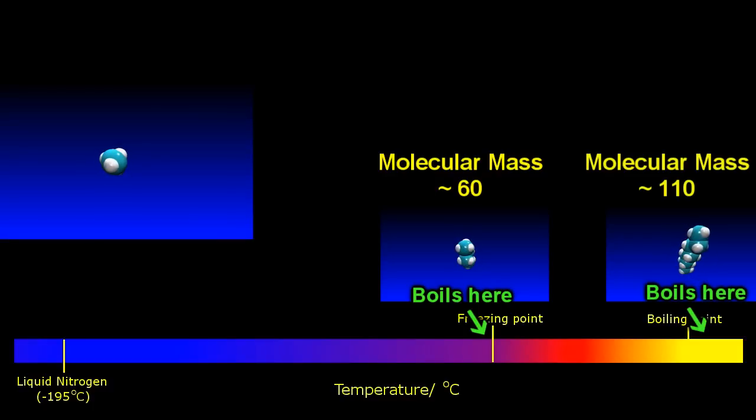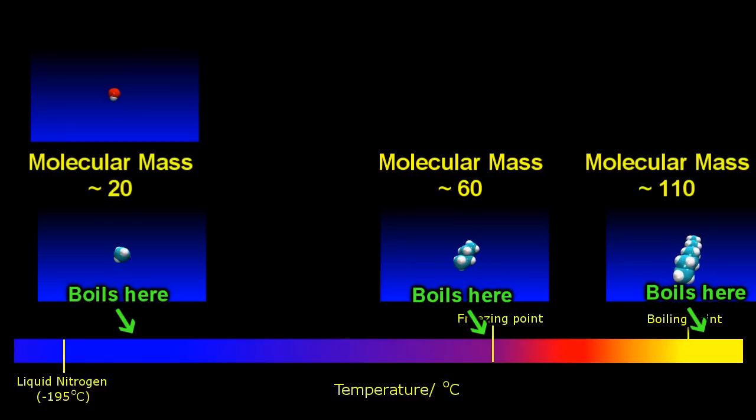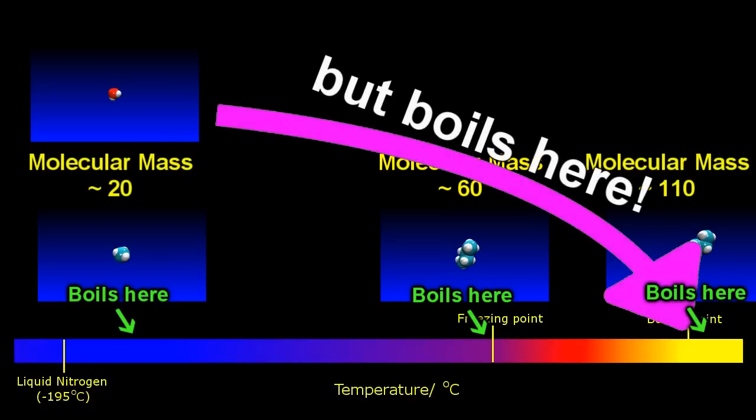So, as expected, methane, which is about a quarter of the molecular weight of butane, is a very good gas at room temperature, and boils at about 170 degrees Celsius below freezing. However, water has almost exactly the same mass as methane, yet it boils almost 300 degrees Celsius above it.